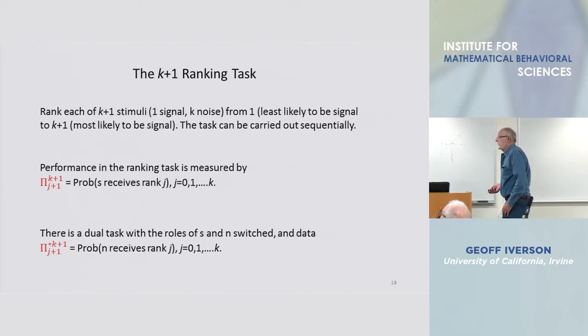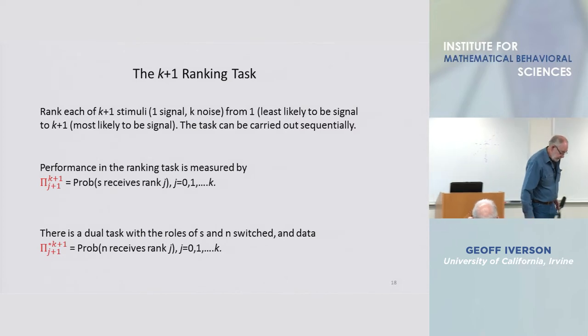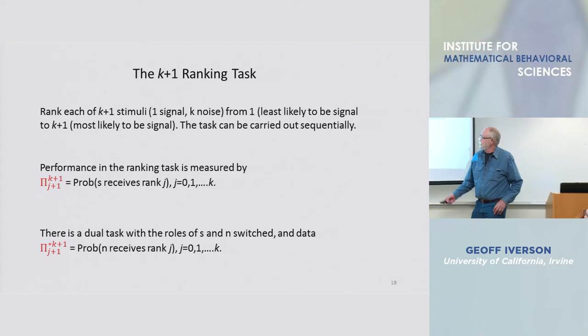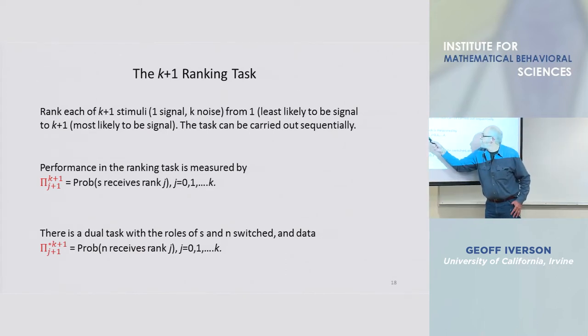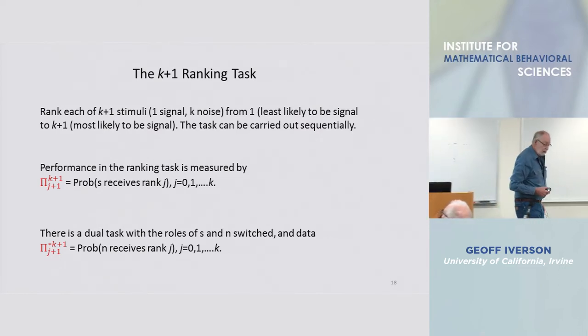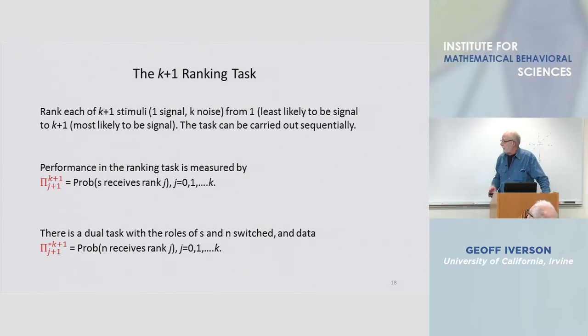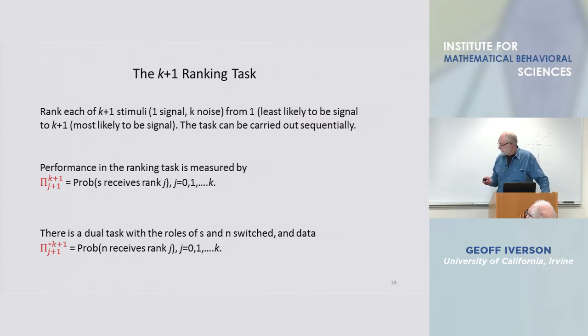Now let's talk about the ranking task, which is not a common task. There are some data in the literature but not much. The performance in the ranking task is measured as a probability that the signal receives a rank of j plus one, where j is a number either zero or one through k, and there is a dual task that goes with that.